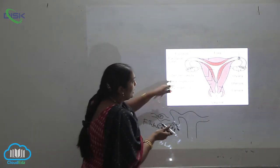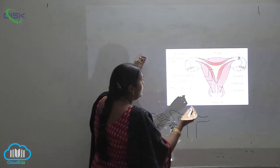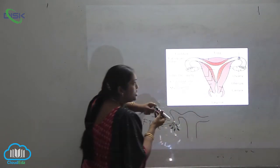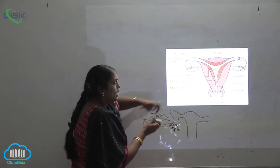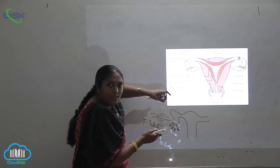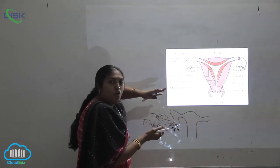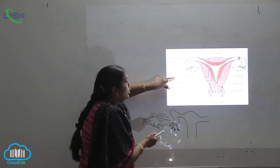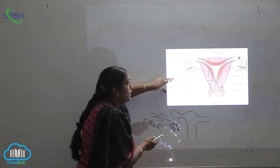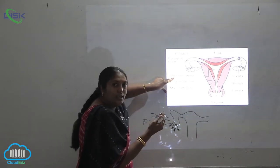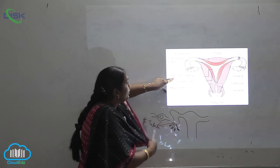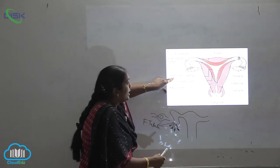You can see the middle region, which is very swollen and somewhat cushion-like in structure. This is called the uterine cavity.